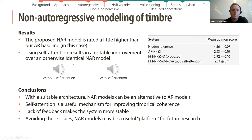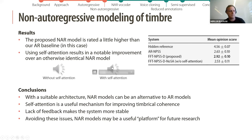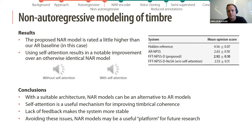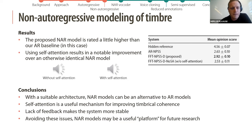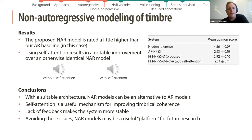Maybe you noticed a little bit of fluctuations in the levels especially. And here with self-attention: [Audio demo with self-attention plays: 'You know you're something special and you look like you're the best.'] It's more consistent. The conclusions are that with a suitable architecture, non-autoregressive models can be an alternative to autoregressive models, self-attention is a useful mechanism for improving timbral coherence, and the lack of feedback makes the system more stable.